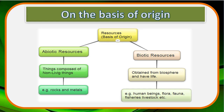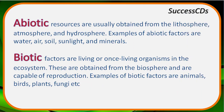Biotic resources are those obtained from living organisms — bio means life. Even human beings are a biotic resource for nature. Abiotic resources are usually obtained from the lithosphere, atmosphere, and hydrosphere. Examples include water, air, soil, sunlight, and minerals. Biotic factors are living or once-living organisms in the ecosystem, obtained from the biosphere and capable of reproduction. Examples are animals, birds, plants, and fungi.